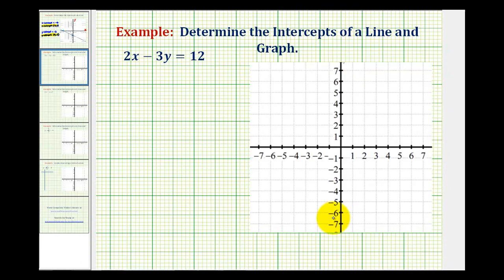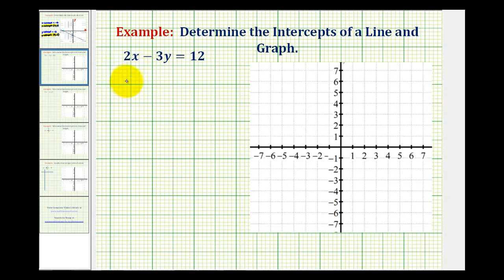Notice that every point along the x-axis has a y-coordinate of zero, and every point along the y-axis has an x-coordinate equal to zero. From this information, we can determine the x and y-intercepts.